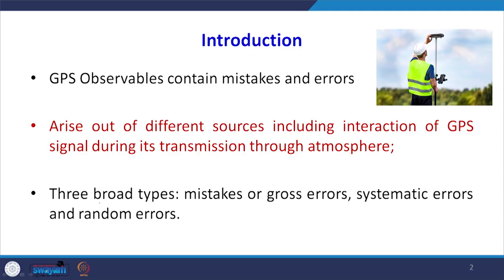When we take observations using the methods explained in the previous lecture, those observations have some kind of inherent errors present in the data. There could be mistakes or errors present in the observations. We have to understand what those errors are, what the sources are, and how we can minimize them. Mainly, signals are traveling through the atmosphere, which will intervene and give some kind of error. We have basically 3 types: gross error, systematic error, and random error.